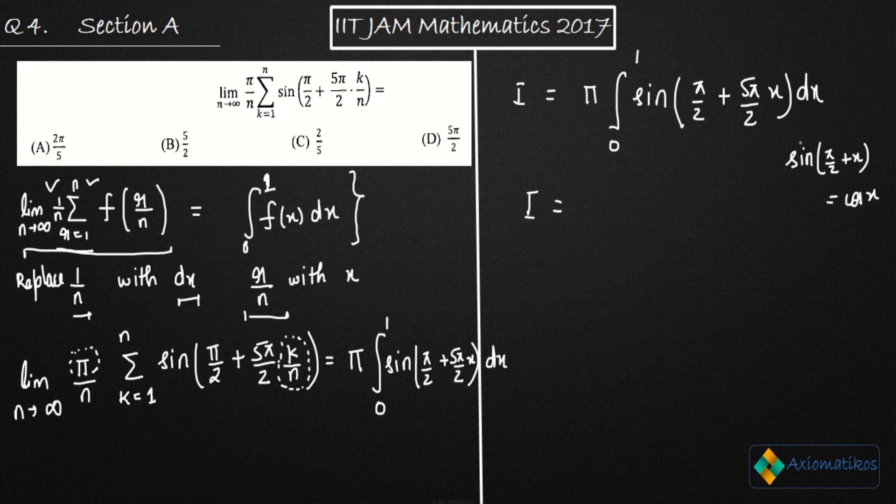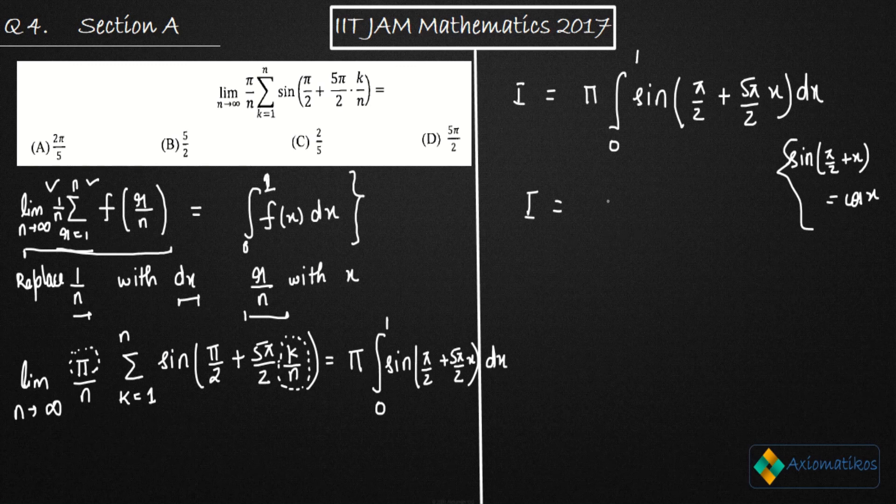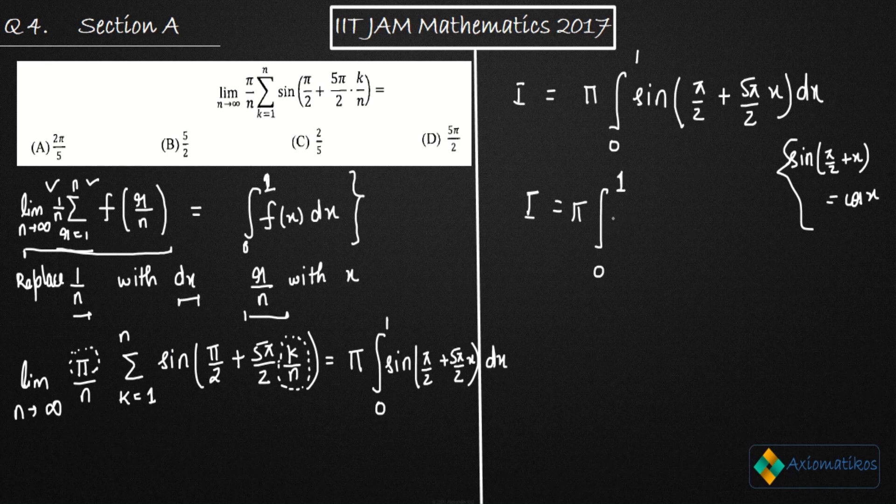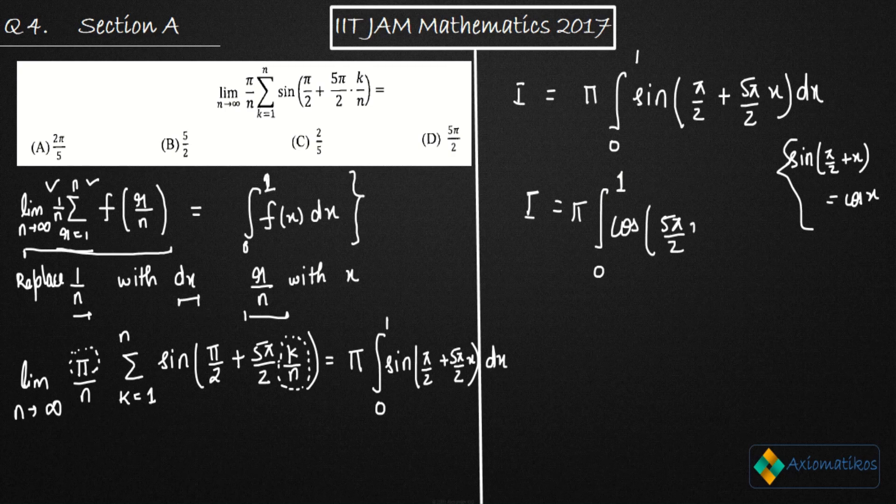You know already that. You can use it just to make this integral a little bit simple, but also without using this, you can integrate. I'm just writing this in order to make this thing simple. So what you will get, you will get 5 pi by 2 X dx.